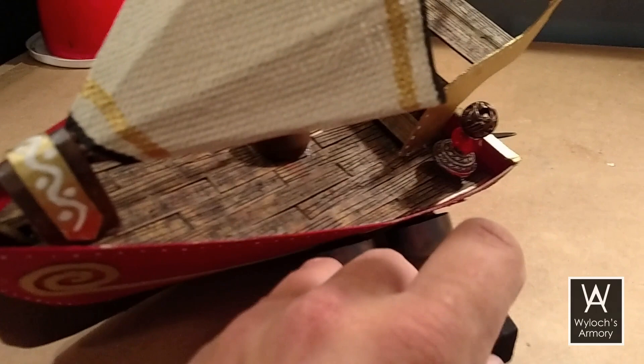Oh and one last thing. To keep the thing upright on the table while you're playing, just take these random wood bits again from the craft store. Paint them black and use them to prop up each side of the ship.